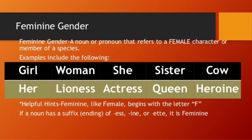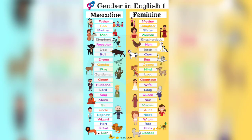Let us now see masculine and feminine gender pairs. Father — masculine, mother — feminine. Son — daughter. Brother — sister. Shepherd — shepherdess. Rooster — hen. Also known as cock and hen. Dog — bitch. Bull — cow.